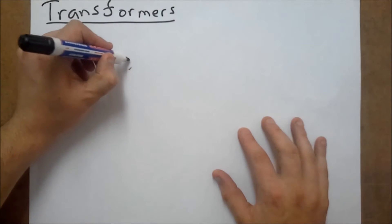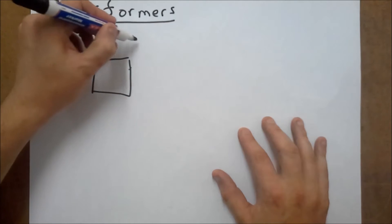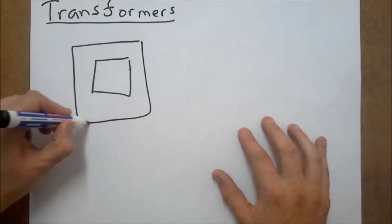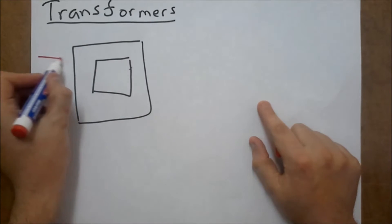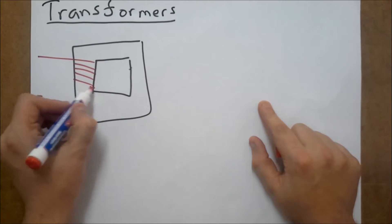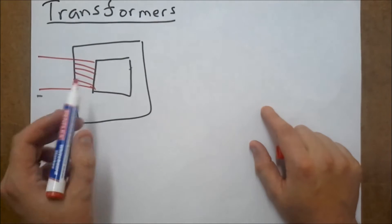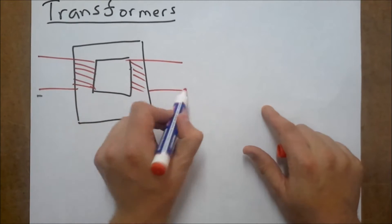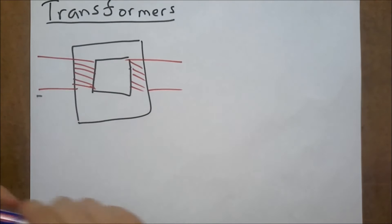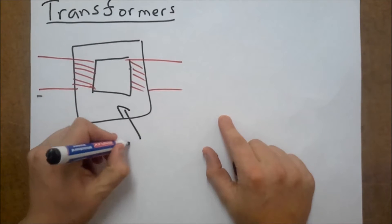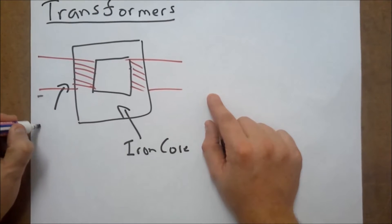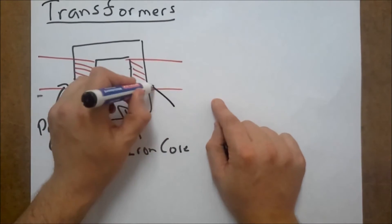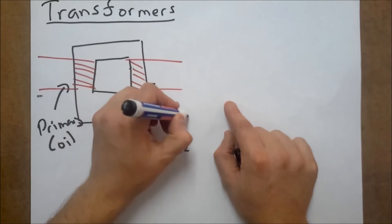So, any transformer, basically, you've got your primary coil and you've got something called a secondary coil. This here is the iron core. This is the primary coil. This here is our secondary coil.